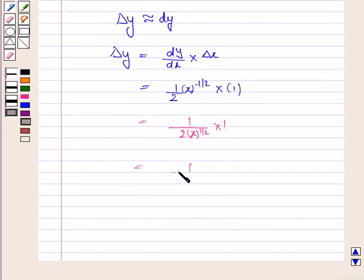Let us now substitute the value of x here. So this is 2 into 400 to the power 1 by 2. 1 by 2 into 400 to the power 1 by 2 will be 20 as 400 can be written as 20 square.